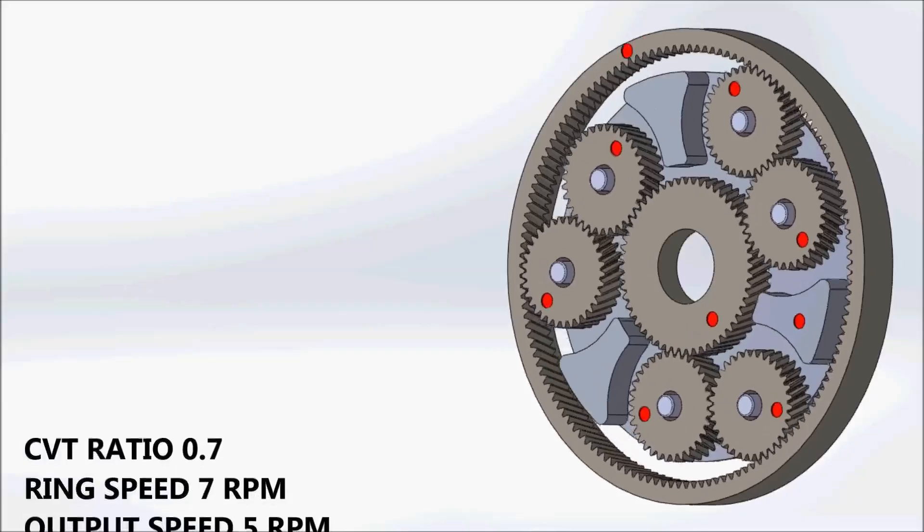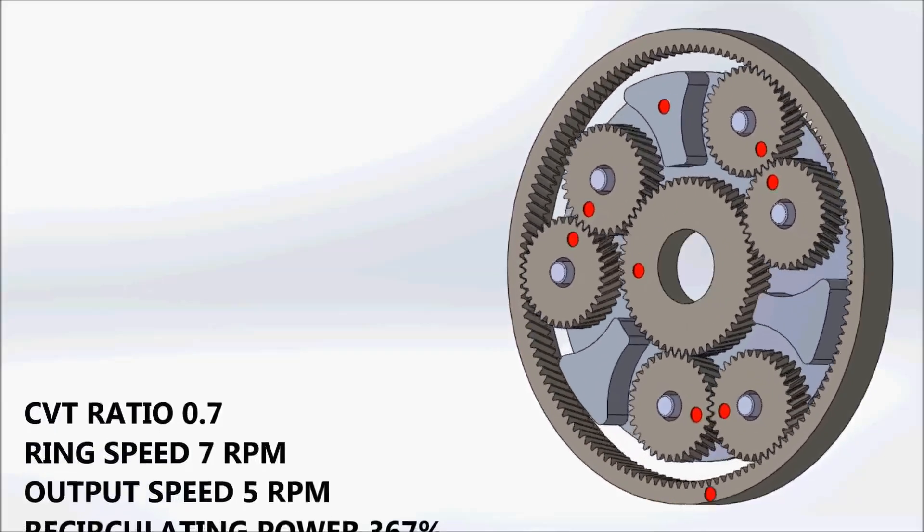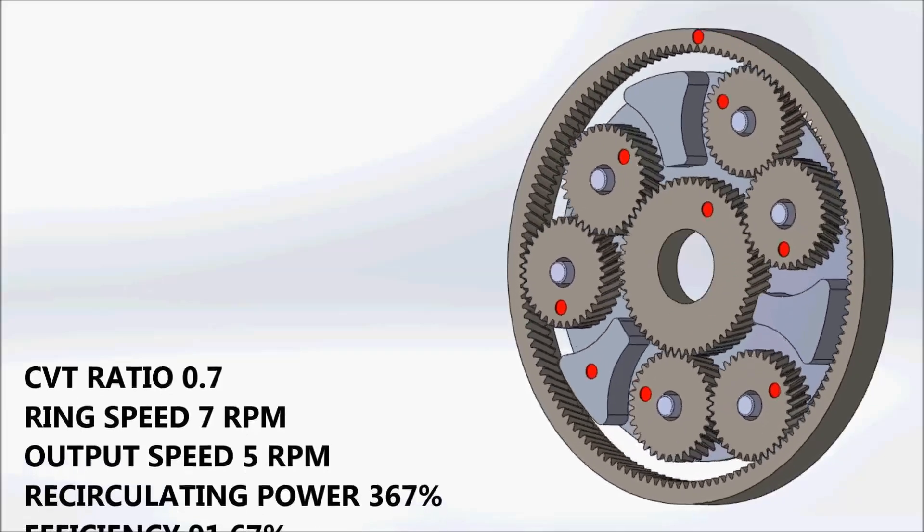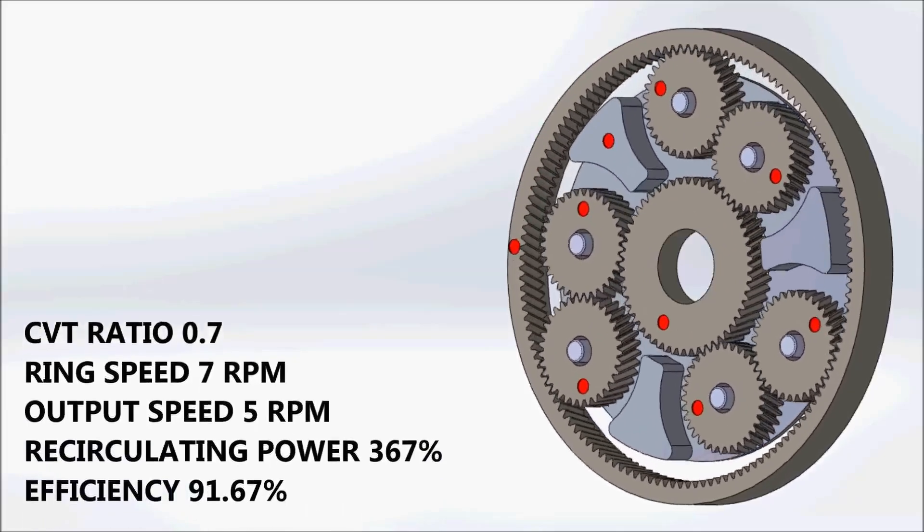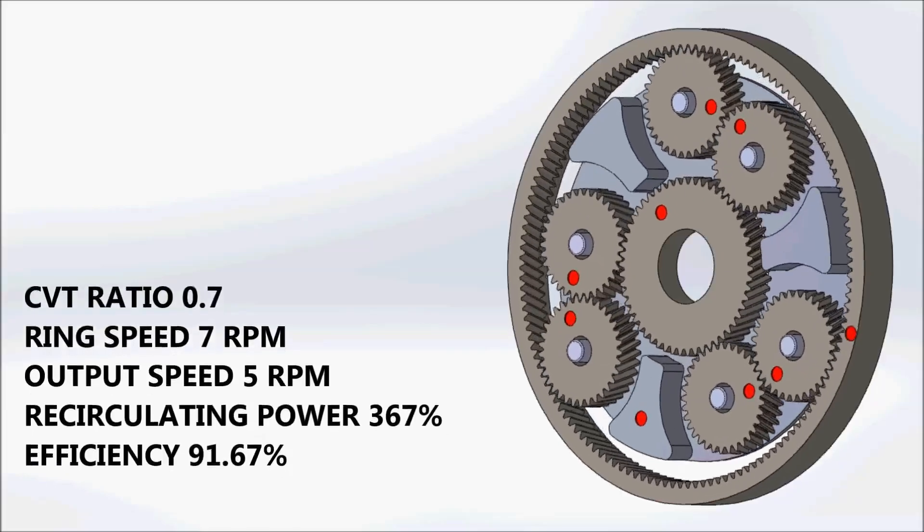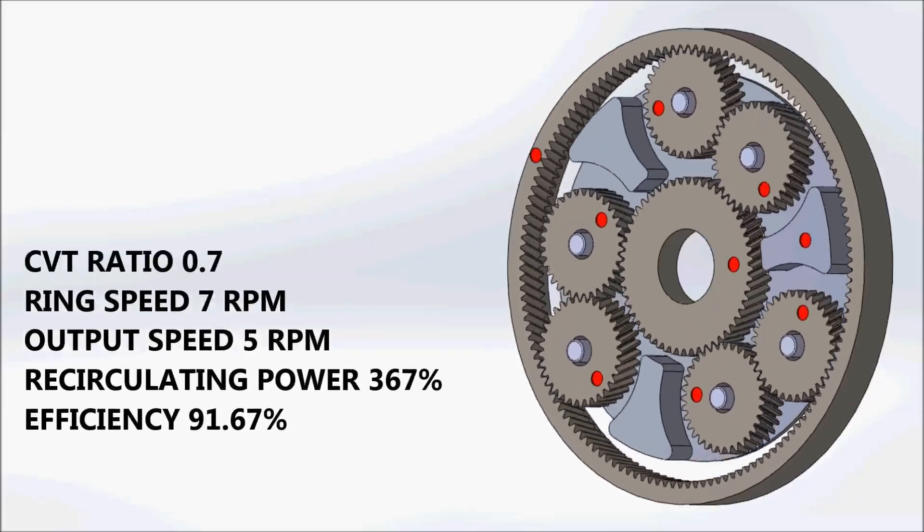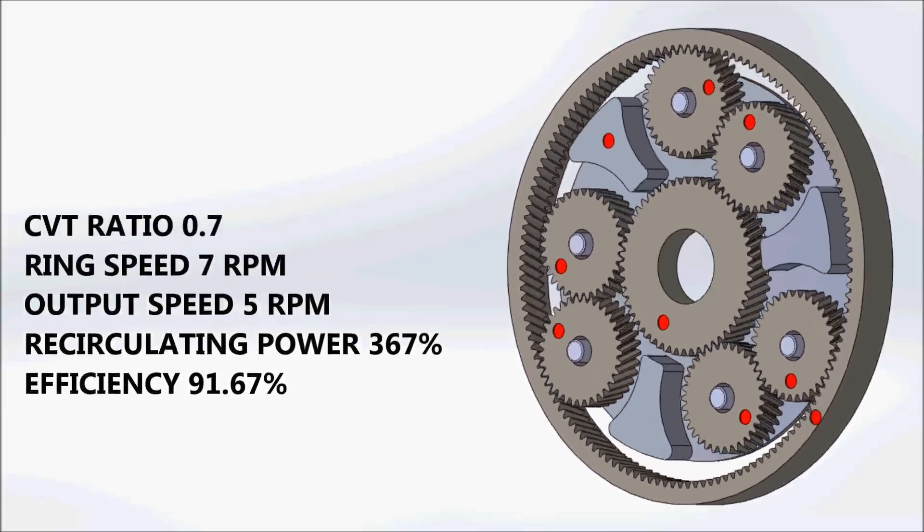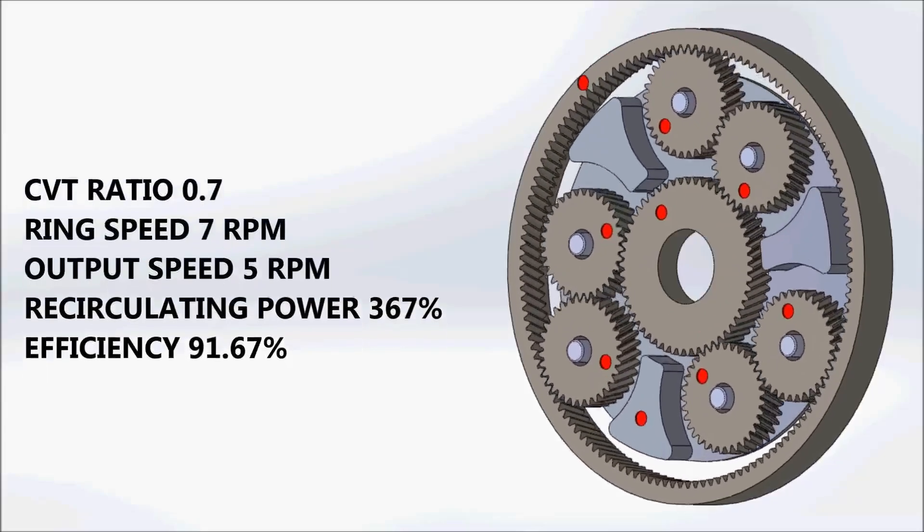As the CVT ratio is moved away from the geared neutral position, the output speed of the planet carrier starts to move in the forward direction, but slowly. The CVT ratio is now 0.7, and the output speed is 5 in the forward direction. Again, the input speed remains at 10 rpm in this animation. The vehicle is now moving forward slowly.